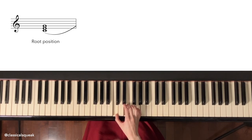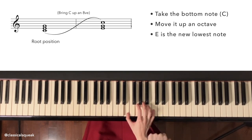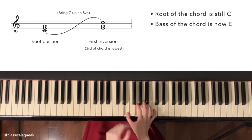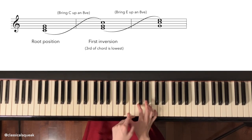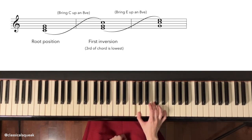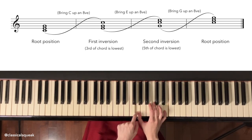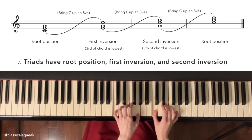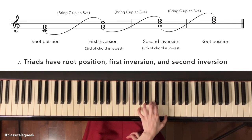If we move the bottom C to the top, which makes E the new bottom note, we have first inversion. The root of the chord is still C, but the bass of the chord, which is the lowest note, is now E. So we would call this a first inversion C major triad. If we take this E and move it on top, which makes G the bottom note, we now have second inversion. If we take the G and put it on top, we're back to root position. This means that the triads have a root position, first inversion, and second inversion.